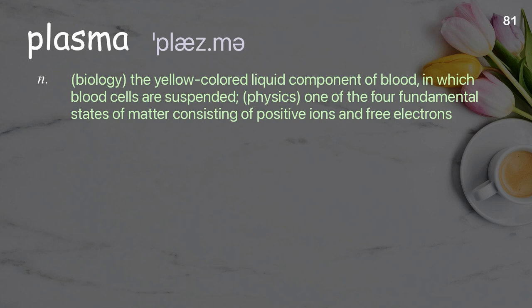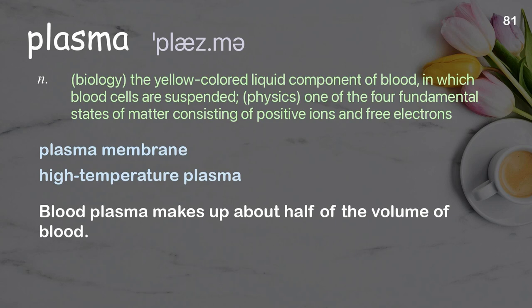Plasma: in biology, the yellow-colored liquid component of blood in which blood cells are suspended. In physics, one of the four fundamental states of matter, consisting of positive ions and free electrons. Examples: plasma membrane, high-temperature plasma. Blood plasma makes up about half of the volume of blood.